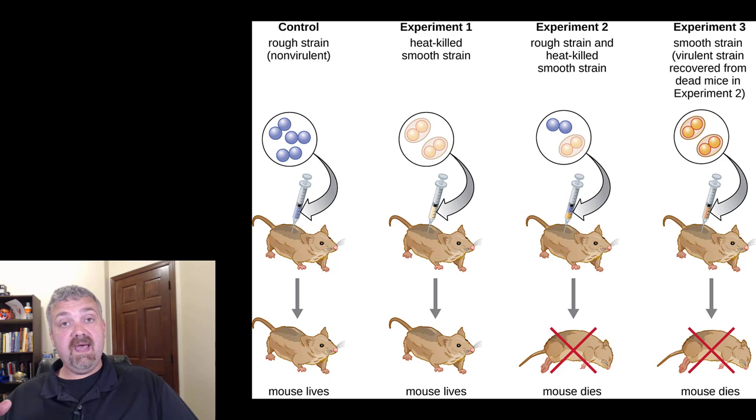Hopefully you remember from a few chapters back that the capsule helps an organism evade phagocytosis. The encapsulated forms of this bacteria, Streptococcus pneumoniae, still kill 1.4 to 1.5 million human beings a year. This is a very serious deal.